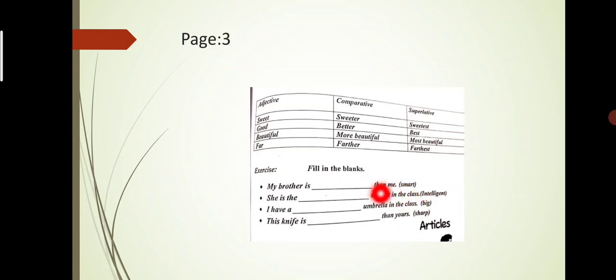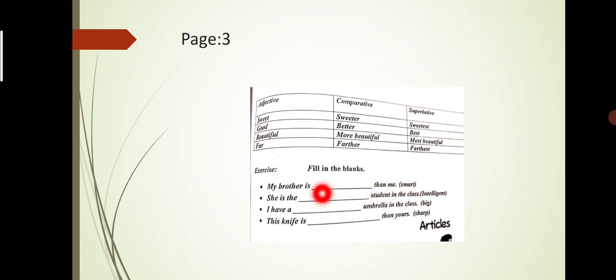For example: 'My brother is ___ than me (smart).' Since there is 'than,' we use the comparative: smarter. So: 'My brother is smarter than me.' Next: 'She is the ___ student in the class (intelligent).' Since it says 'the ___ in the class,' we use the superlative form. Intelligent cannot take EST so we use 'most intelligent.' She is the most intelligent student in the class.